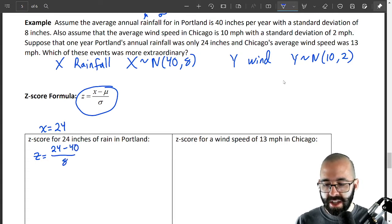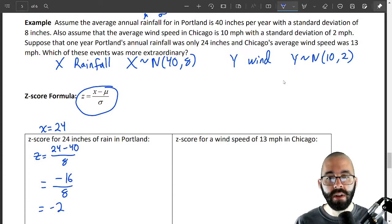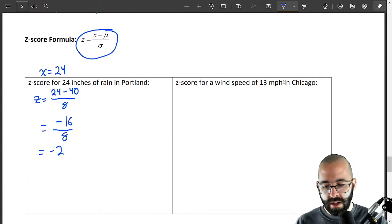divided by the standard deviation which is 8. You can use a calculator, it's going to be negative 16 over 8 or negative 2. Z equals negative 2 means